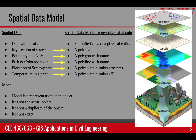For example, in the case of the intersection of streets, it could be represented as a point with a name. The boundary of UNLV, our campus, could be a polygon with a name. Lines, points, and polygons can all be used to represent these spatial data sets.